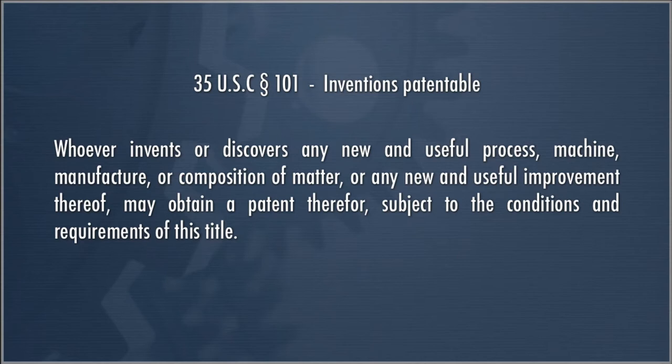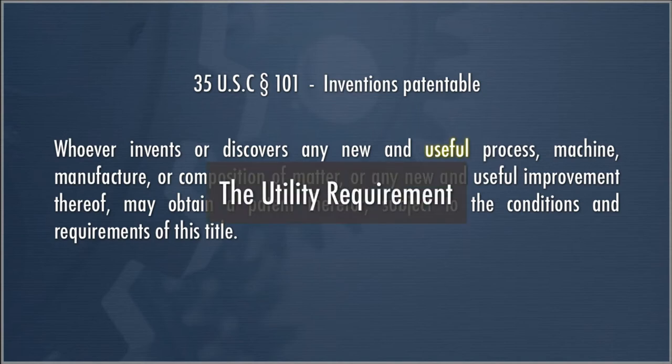Section 101 is the key section here. It defines inventions that are patentable: whoever invents or discovers any new and useful process, machine, manufacture, or composition of matter, or any new and useful improvement thereof, may obtain a patent, subject to the conditions and requirements of this title. There are two components to Section 101. One derives from the word 'useful' — that's the utility requirement, meaning all patentable inventions must be useful.